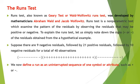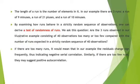Together these form 40 total observations. A RUN is defined as an uninterrupted sequence of one symbol or attribute, such as plus or minus. The length of a run is the number of elements in it. In our example, we have three runs: a run of 9 minuses, a run of 21 pluses, and a run of 10 minuses. By examining how runs behave in a strictly random sequence of observations, one can derive a test of randomness.